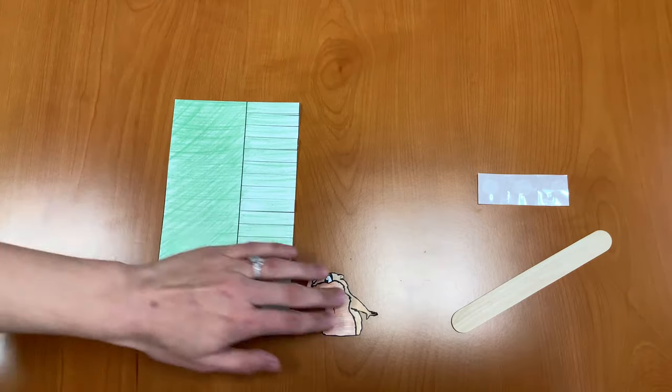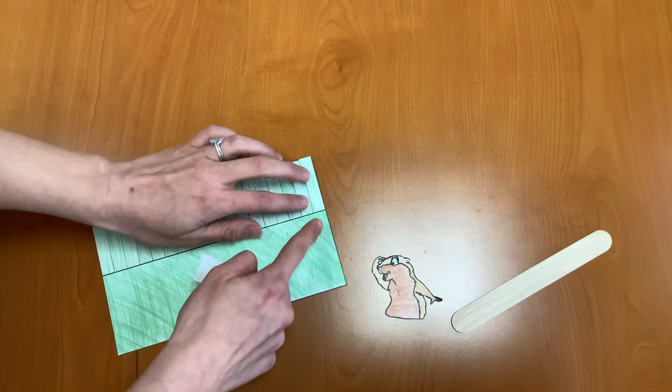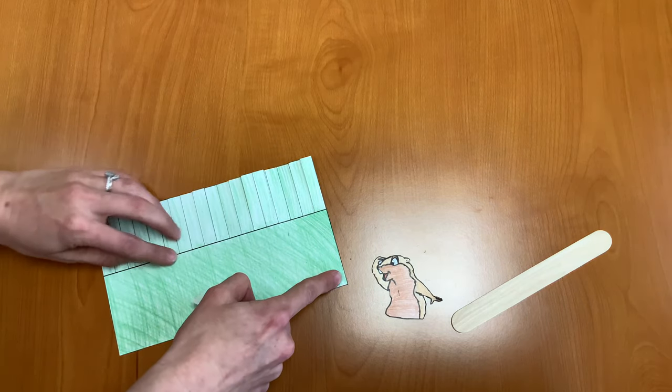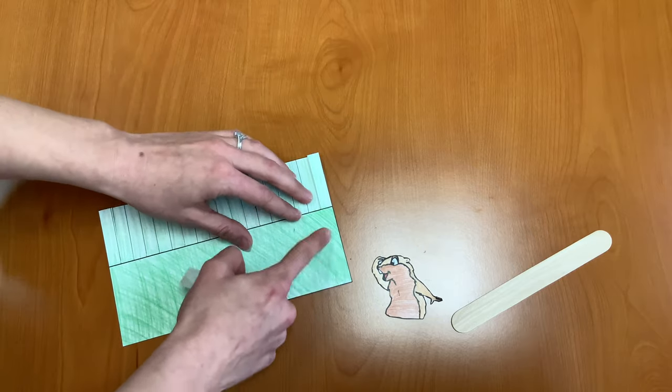Our next step is going to be to take two of our glue dots and we're going to put them right here on the grass. One, two. We don't want to put it on the cut part, but we want to put it on the solid part.